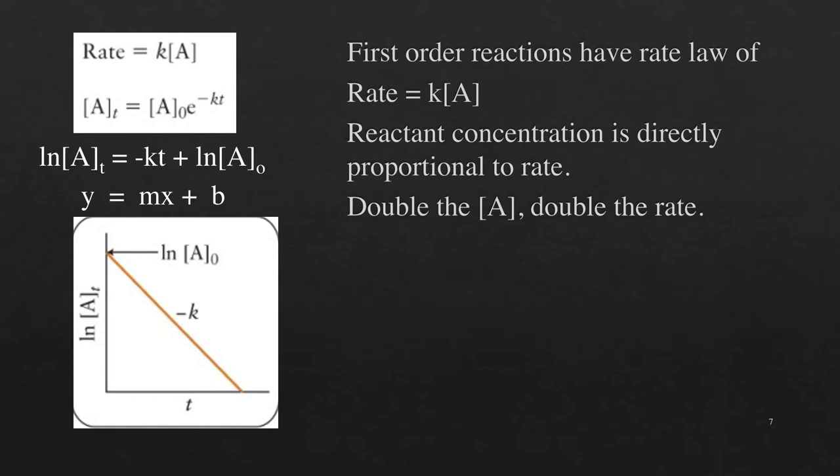When this is integrated with respect to time, one can see the plot of the natural log of the reactant concentration versus time gives a straight line. The negative of the slope of that line is equal to the rate constant.